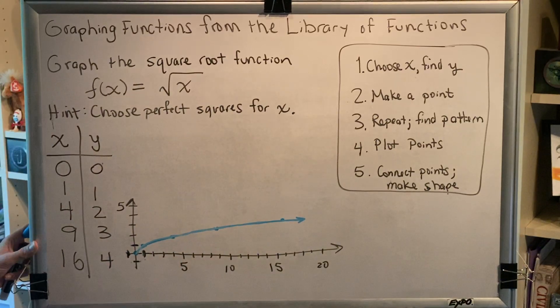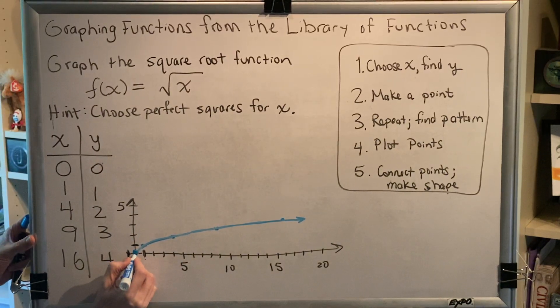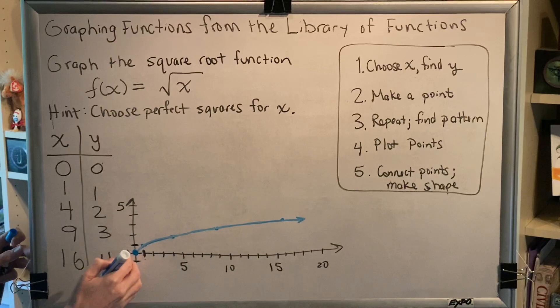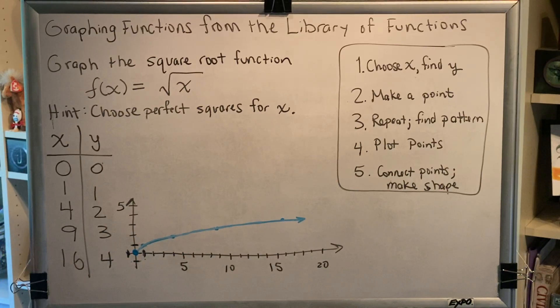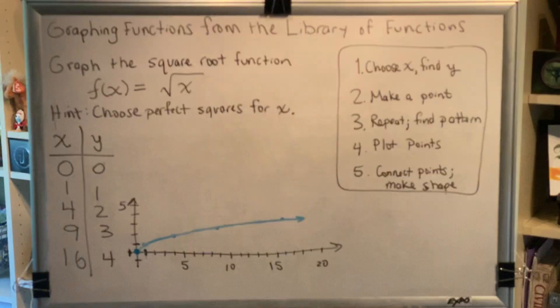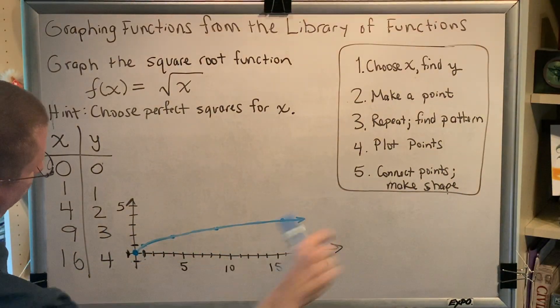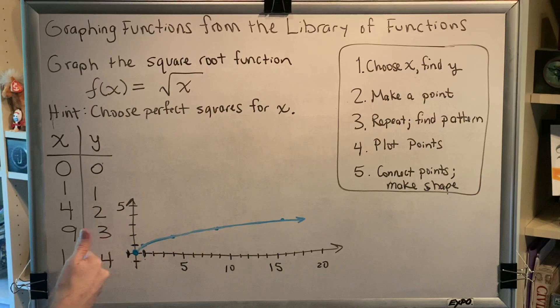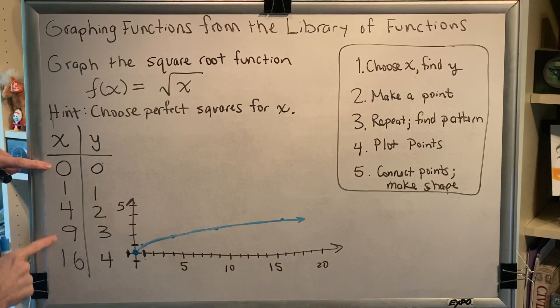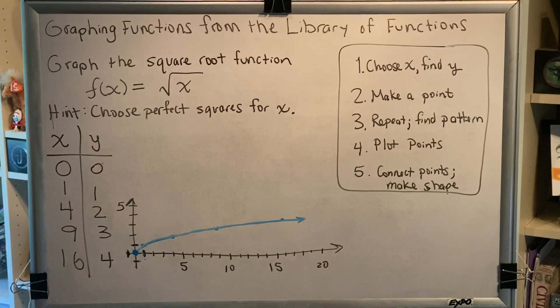Now, something that's very important to notice about this graph is there's no points to the left of the origin. You could say that the graph starts at the origin and then continues on upward and rightward forever. But there is no part of the graph that's over here. And the reason why is because you cannot take the square root of a negative and expect to get a real number.